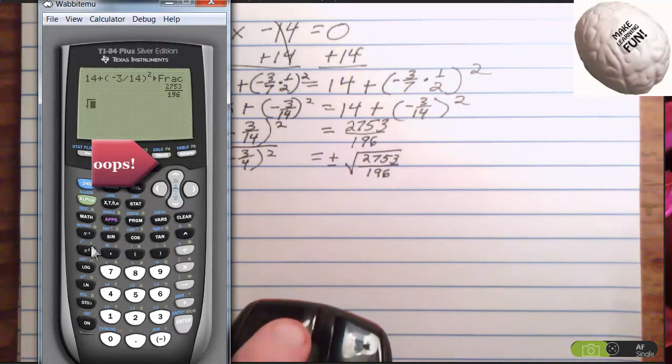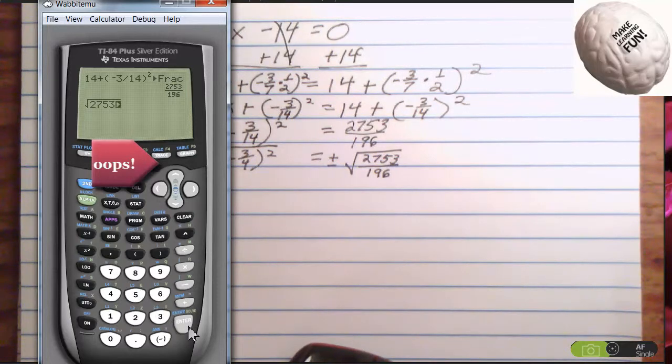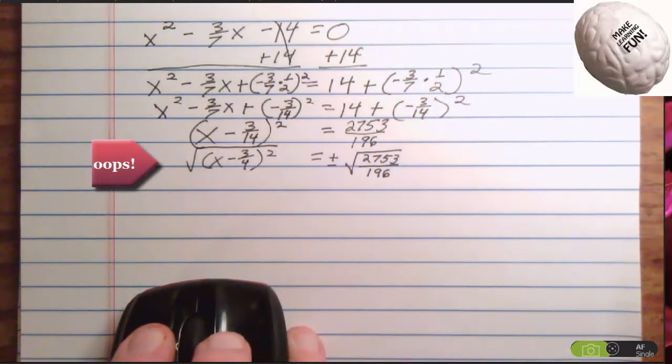Second x square, 2753, enter. Yep. No, it's not.